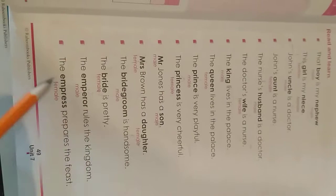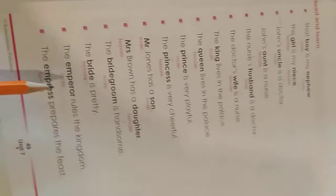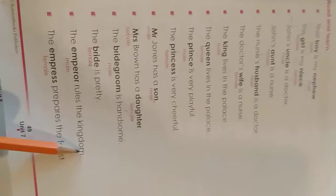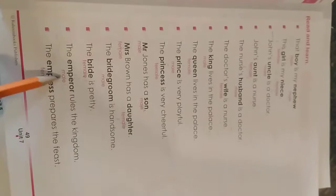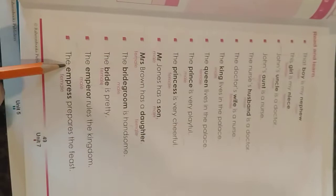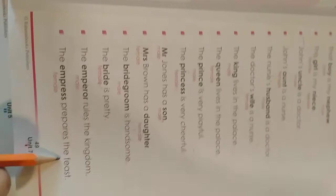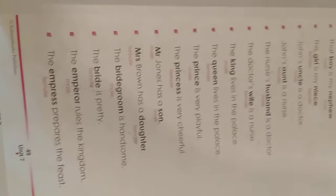The emperor rules the kingdom. Emperor means king or ruler — woh kingdom ka hukmaran hai. Emperor is male. The empress prepares the feast. Empress is the queen — malka — who prepares the feast, a large meal. So empress is female and emperor is male.